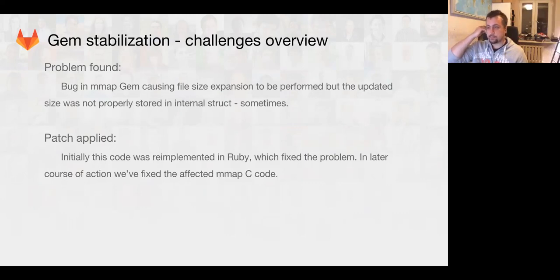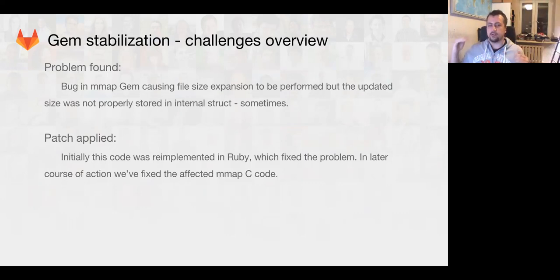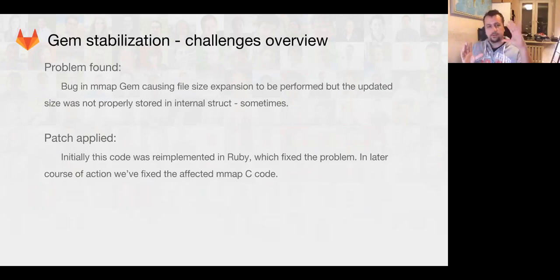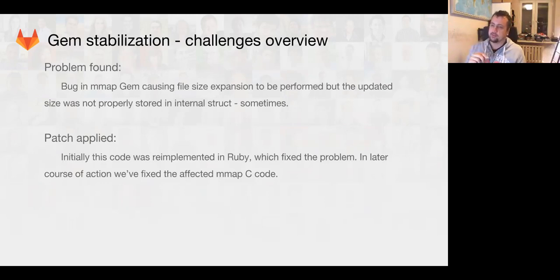We had some problems — mostly with metric corruption. One reason corruption happened is that whenever Ruby code adds a new metric, it needs to add a line to the file. Sometimes the file gets enlarged — starting at 4,000 kilobytes and going up to 15 or 16 kilobytes. It mostly worked, but sometimes it didn't. It turns out the mmap gem had a bug where it didn't update internal information about the file size. Adding one extra storage line seems to fix that, so that's working correctly now.